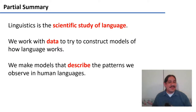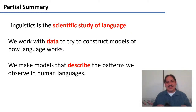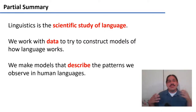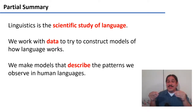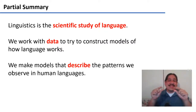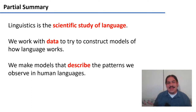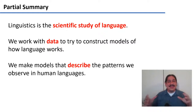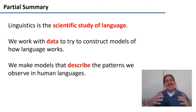As a partial summary: linguistics is the scientific study of language, and we work with data — like Swahili data or Greek data — to construct models of how language works. We took Greek data and guessed which word meant 'dog,' forming a hypothesis that it was SKILOS. We use this to describe the patterns we see and, in general, to describe human languages. We looked at patterns in phonology and morphology. In the next video, we will look at syntax and other subfields of linguistics.